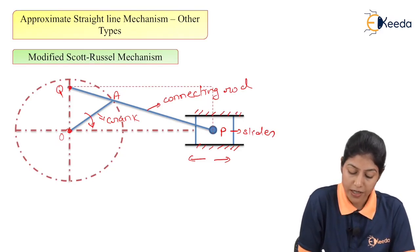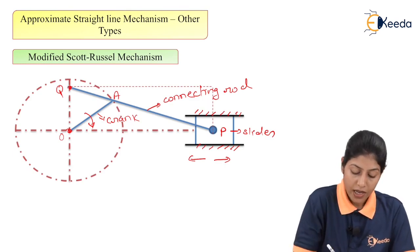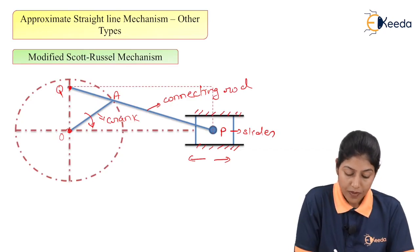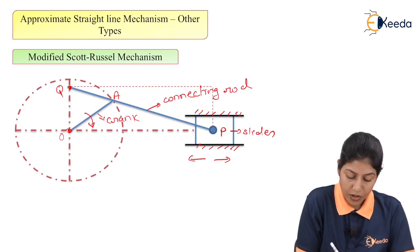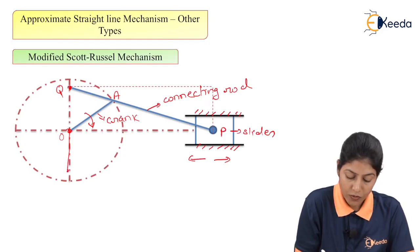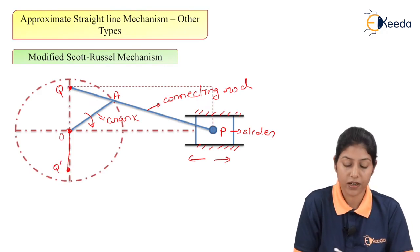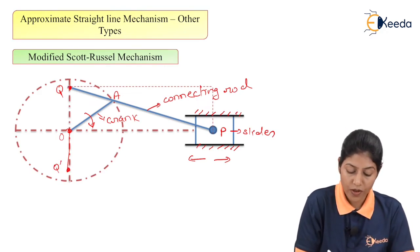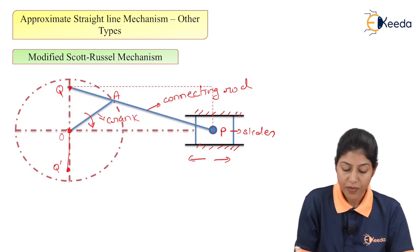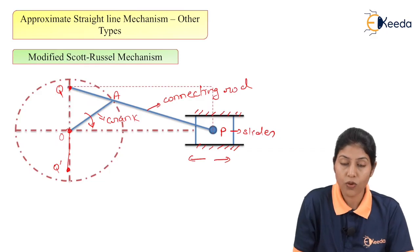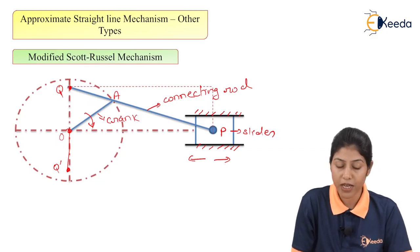With reciprocation of slider P, or complete rotation of OA in one circle, Q will reach position O. For this particular complete rotation, Q will reach Q dash. Q dash is formed such that QO equals 2·OA, and that is the complete reciprocation of point P along length OP. This is the Scott-Russell mechanism.